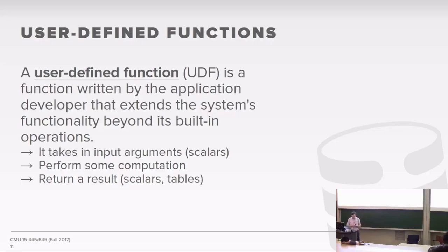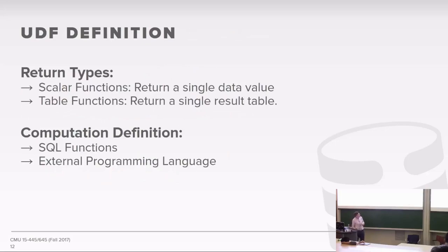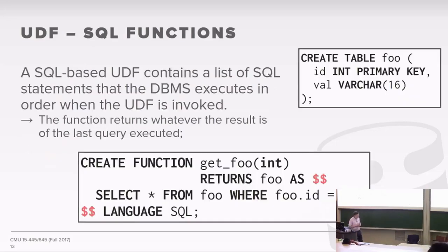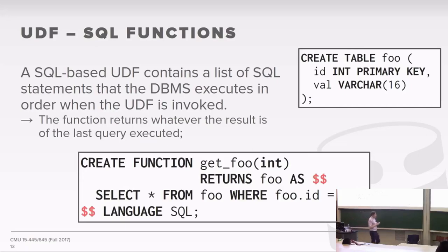The way you define a UDF is in terms of what the return type is going to be and what the computation will be. You can have scalar functions that return a single value, or you can actually return rows from a result table. The easiest way to do a UDF is a SQL function, where you have a bunch of SQL statements listed in the body of the function that get executed in serial order when you invoke it, and the function returns whatever the result of the last query is.